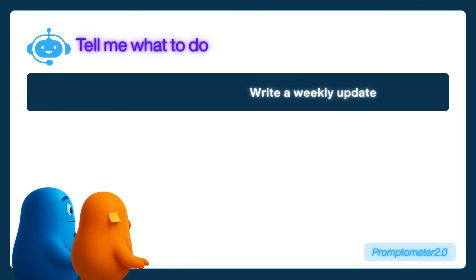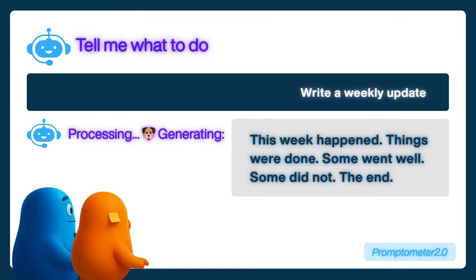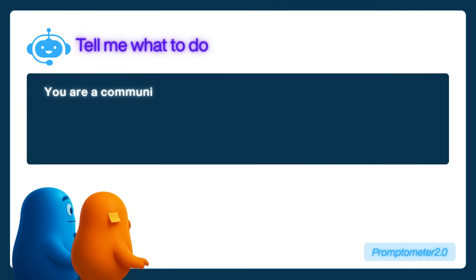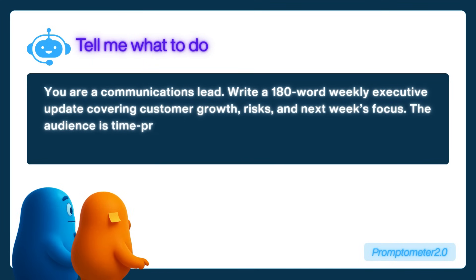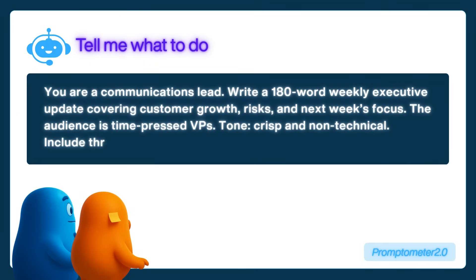Let's put it all together. Here's a weak prompt: 'Write a weekly update.' Now here's a professional one using our framework: 'You are a communications lead. Write a 180-word weekly executive update covering customer growth, risks, and next week's focus. The audience is time-pressed VPs. Tone: crisp and non-technical. Include three bullets per section and use markdown formatting.' See the difference?